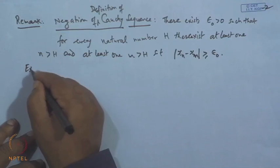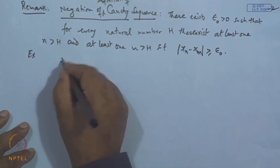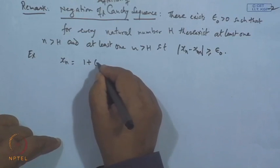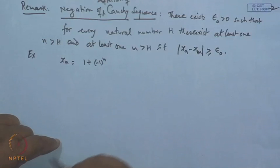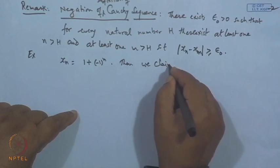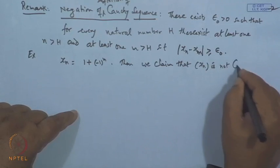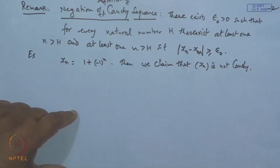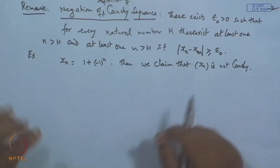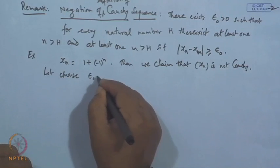For example, consider the sequence x_n = 1 + (−1)^n. We claim this sequence is not Cauchy, meaning the Cauchy condition is not satisfied. Choose epsilon_0 = 2.